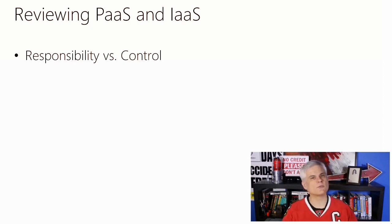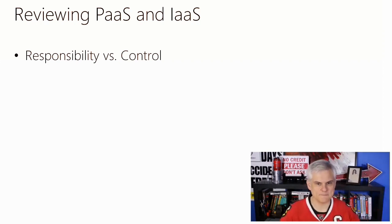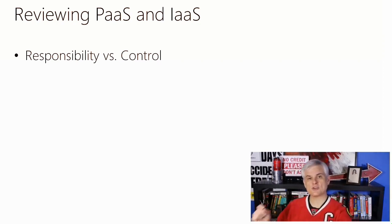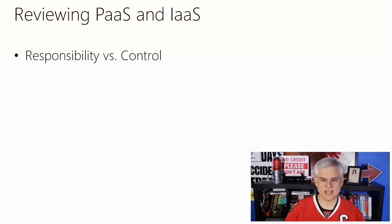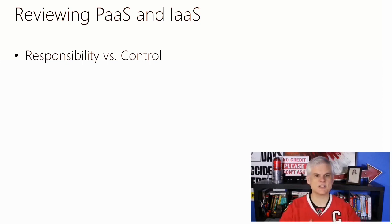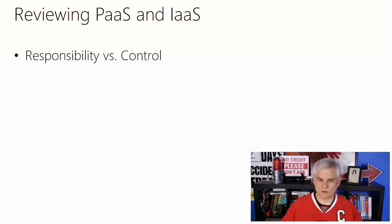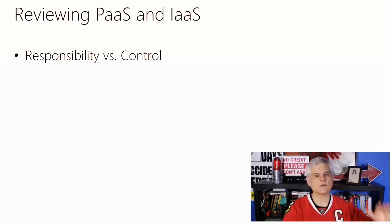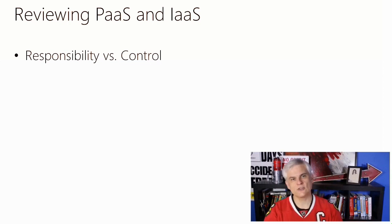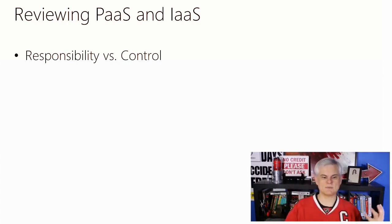For example, we couldn't install some custom third-party software on the computer hosting our website because we didn't have control of the environment. On the other end of the spectrum, we could opt for an infrastructure-as-a-service offering like Azure Virtual Machines, and that gives us total control over the operating system configuration, disk persistence, and what software we can install on the server. Of course, that comes at a price — we're responsible for server software installation, configuration, security patches, and any other updates. So it's that balance between responsibility and control.